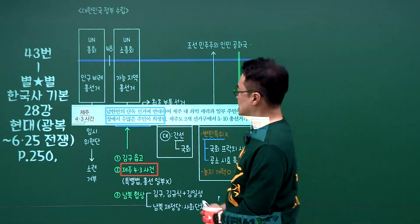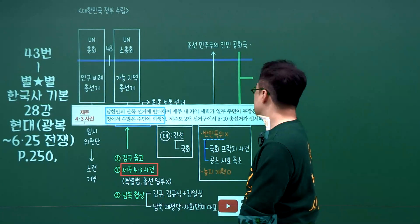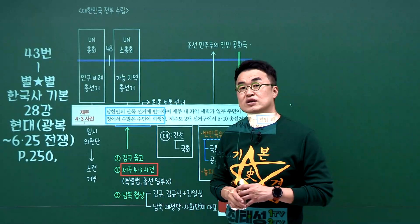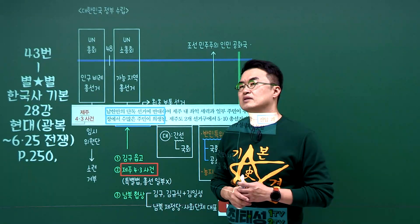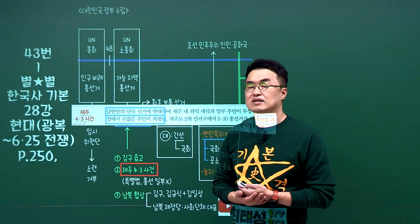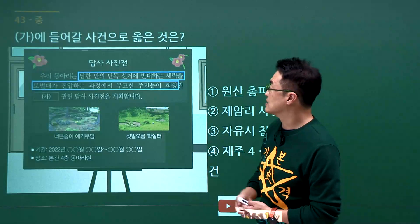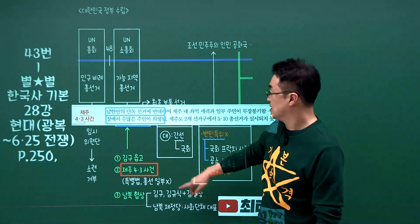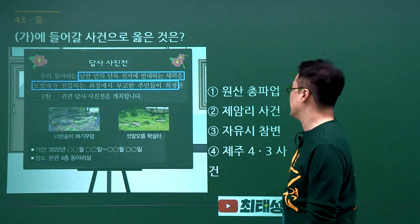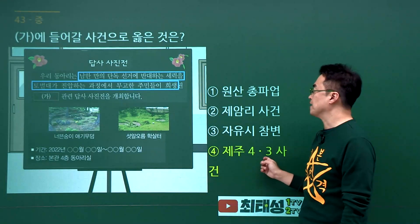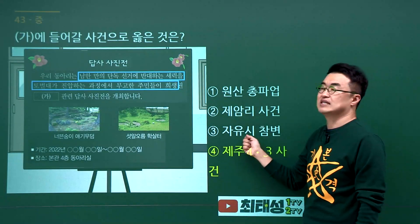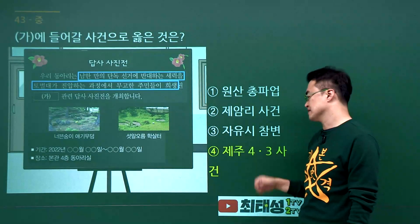제주 4.3 사건 문제입니다. 5.10 총선에 반대하는 분위기 속에서 남로당원들이 주도해 일으켰던 사건이 제주 4.3 사건이며 진압 과정에서 무고한 양민들이 학살되었습니다. 문제에서 남한만의 단독선거를 반대하는 세력이 5.10 총선을 반대하는 과정에서 제주 4.3 사건이 났다는 것입니다. 정답은 4번입니다. 원산 총파업, 제암리 사건, 자유시 참변은 모두 일제강점기 사건입니다. 정답은 4번입니다.